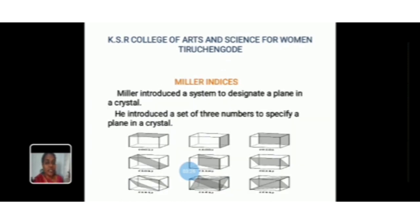Then, Miller indices. Miller introduced a system to designate a plane of a crystal. He introduced a set of 3 numbers to specify a plane in a crystal, known as the Miller indices of the concerned plane. To find them: first, determine the intercepts of the plane along the axes X, Y, Z in terms of the lattice constants A, B, C. Second, determine the reciprocals of these numbers. Third, find the least common denominator (LCD) and multiply each by this LCD. The result is written in the form H, K, L and is called the Miller indices of the plane.